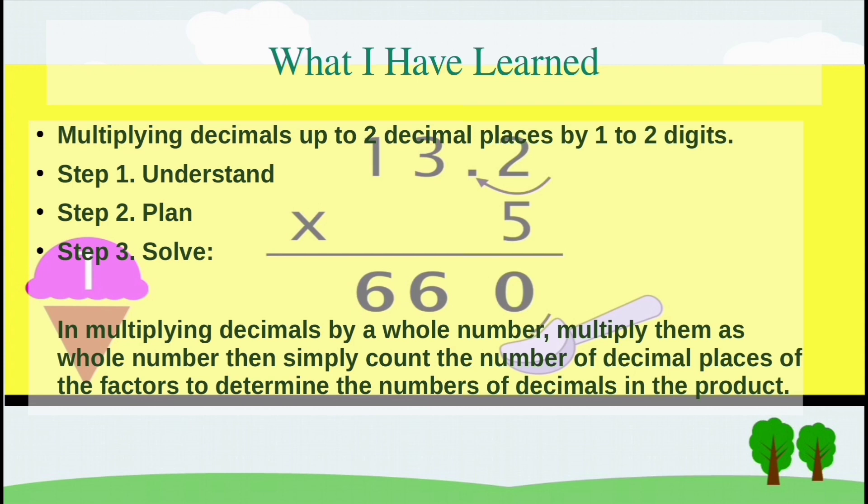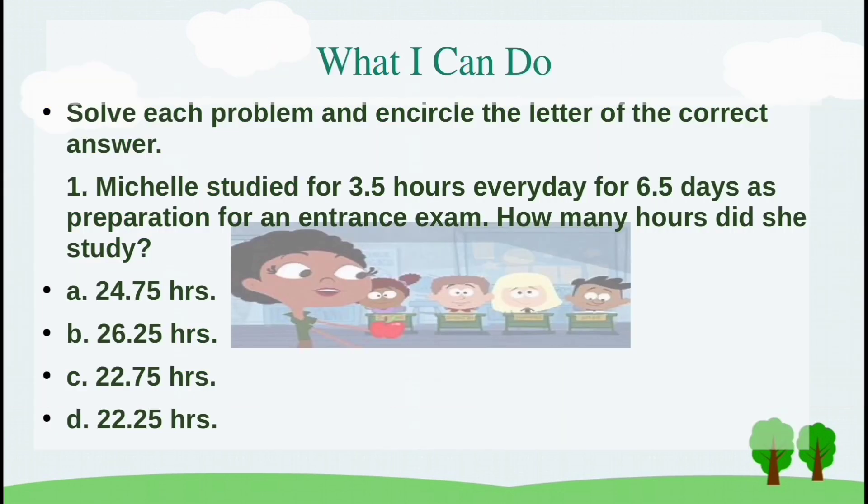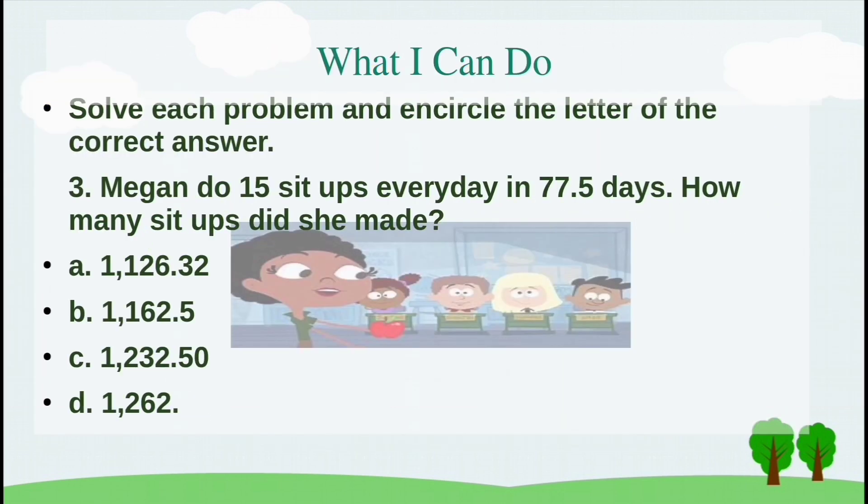What I have learned: Multiplying decimals up to two decimal places by one to two digits. Step one: Understand what is asked, what are the given facts. Step two: Plan strategy, use multiplication. Step three: Solve. In multiplying decimals by a whole number, multiply them as whole numbers, then simply count the number of decimal places of the factors to determine the number of decimals in the product.